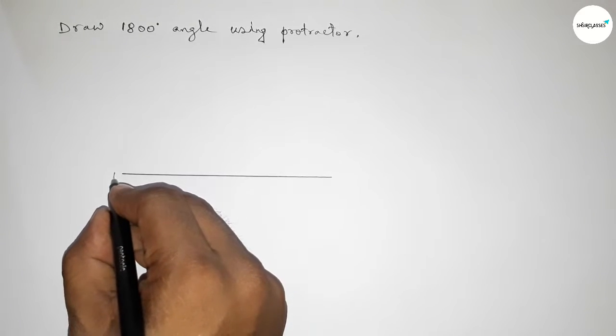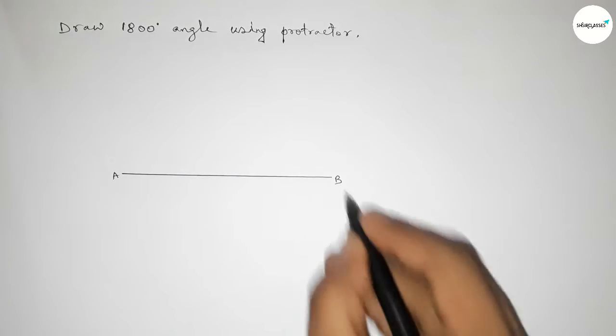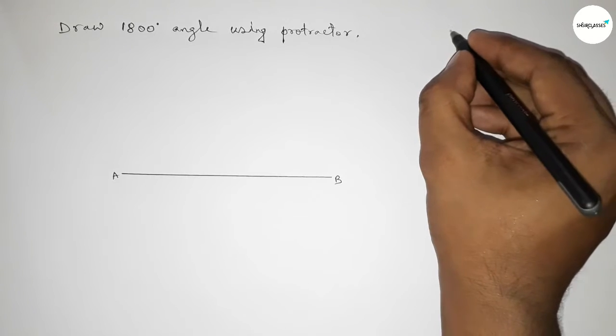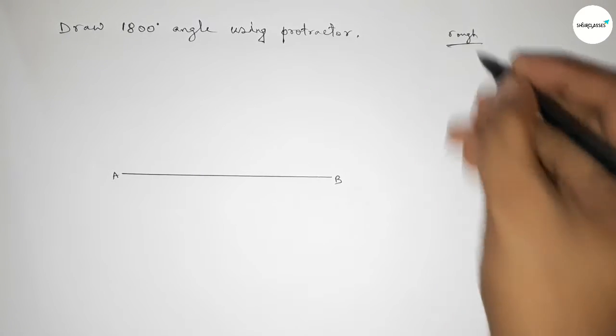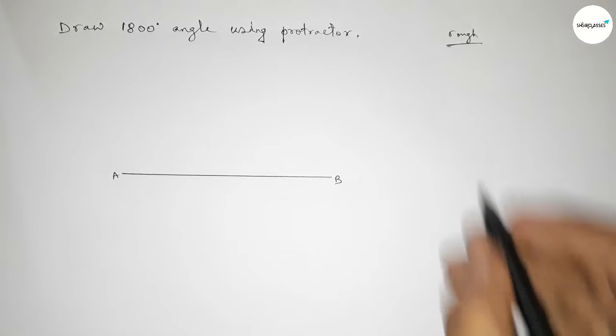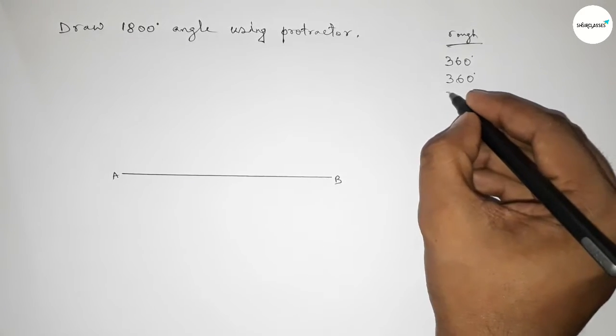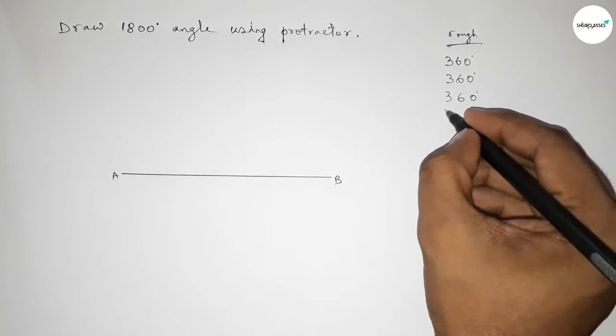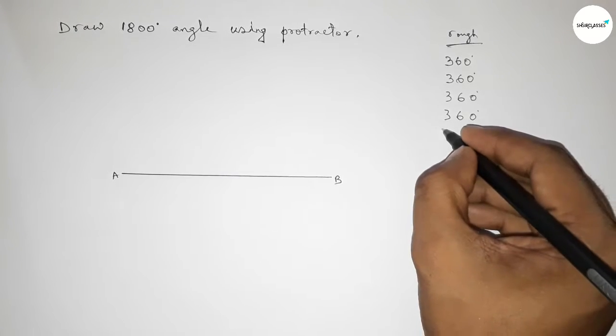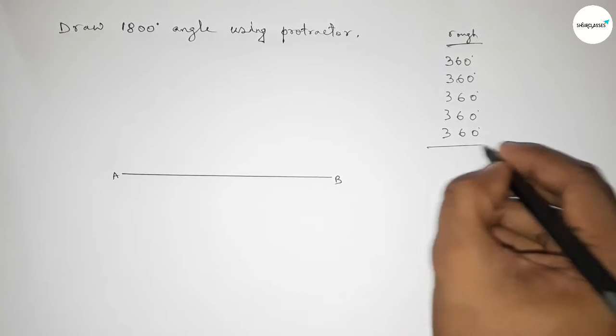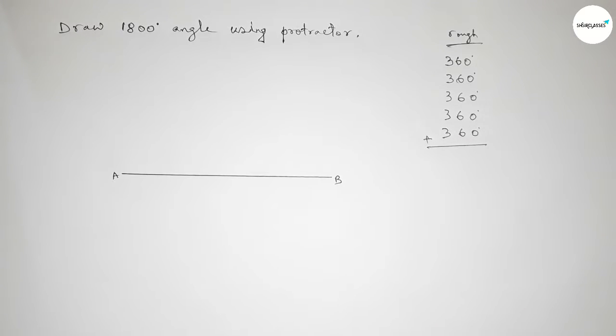and taking here point A and here B. Now, roughly discussing some important calculation here. So now, if we add 360 degree angle five times, then we can get 1800 degree angle.